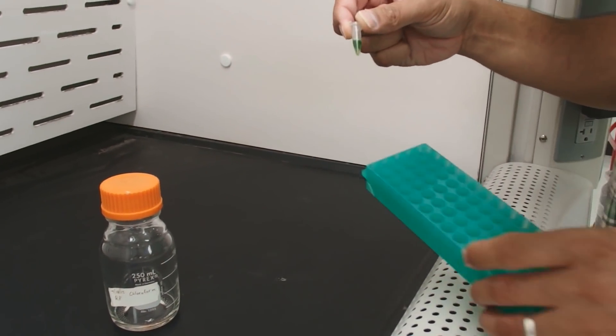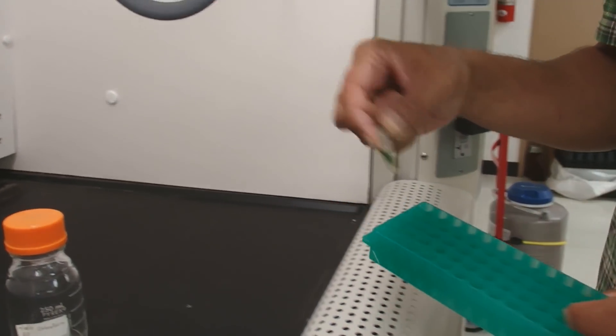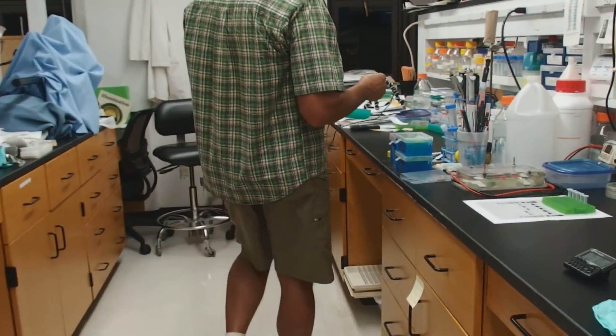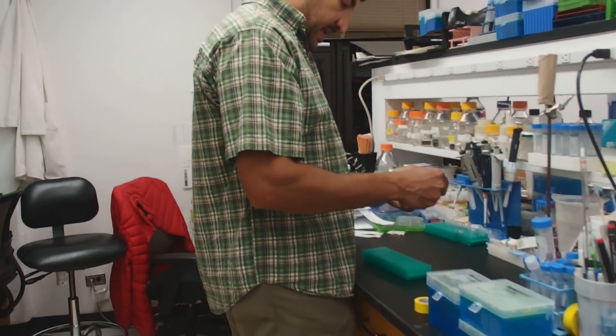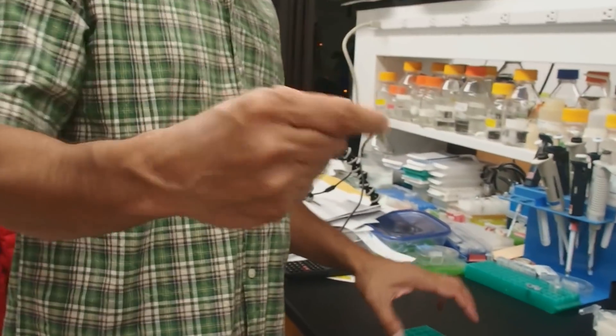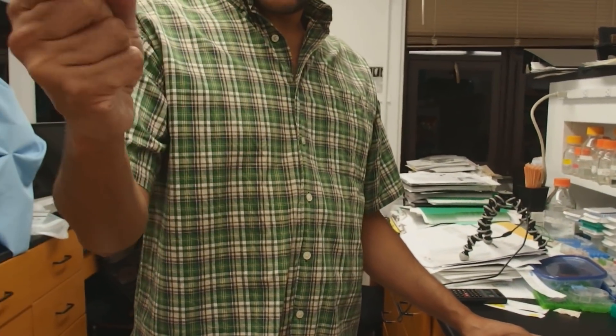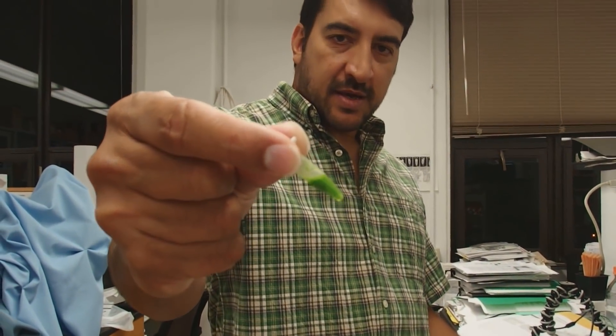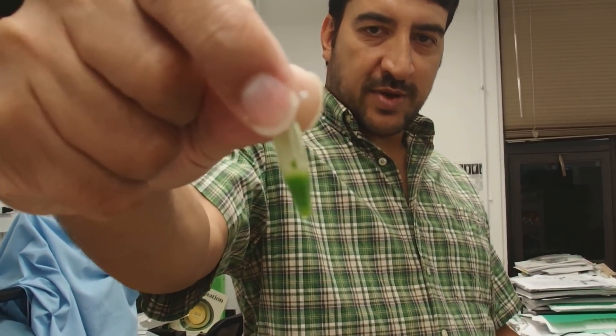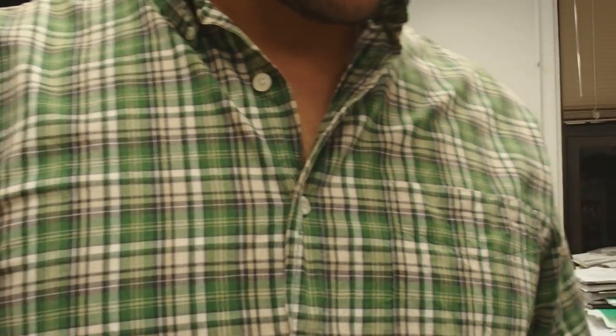Now we need to homogenize this, so we'll go back to the lab bench. Homogenize that by shaking so it looks like a milky substance. Milky green substance for plant material.